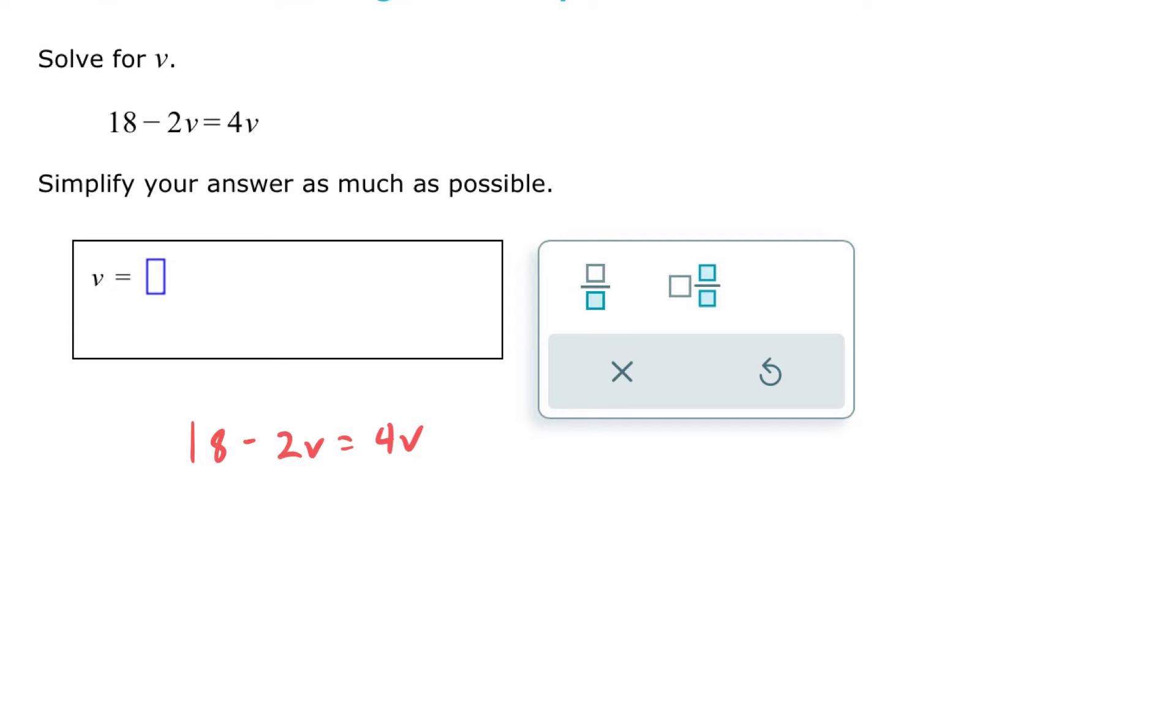To do that, I'm going to add 2v to both sides because what that will do is it will cancel out the v's over here. If I have subtracting 2v and adding 2v, I end up with nothing. And then on the left side, all I'll have left is just 18. And on the right hand side, I'll have 4v plus 2v, which is 6v.